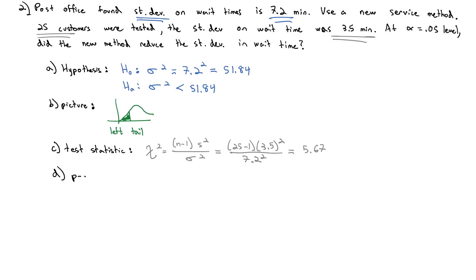This leads us to the p-value calculation using Excel: =CHISQ.DIST(5.67, 24, TRUE). We want the left tail, so we use the test statistic of 5.67, degrees of freedom of 24, and TRUE. The result might be in scientific notation on your Excel sheet. Remember that E means the decimal point moves to the left that many places. The p-value is 0.00004204.